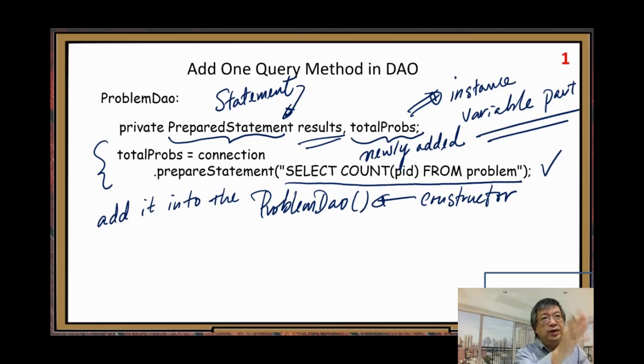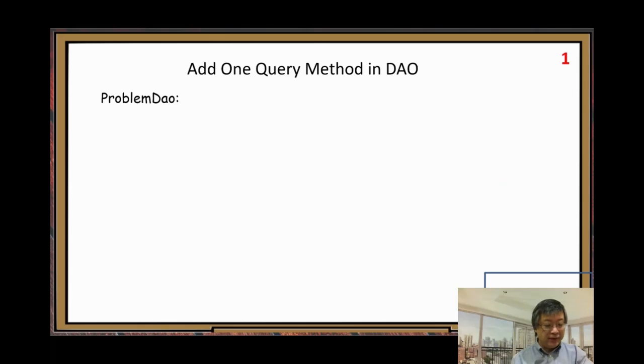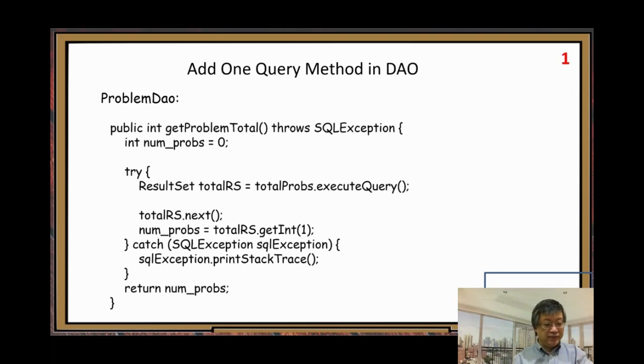Next, we need to write the query method. So the next step, the query method. Still in this class, but we create a new method. So this new method here, let us just call getProblemTotal. No parameter. We don't need to pass any parameter. We just execute, run this method. It returns integer value, total number of questions in the table.